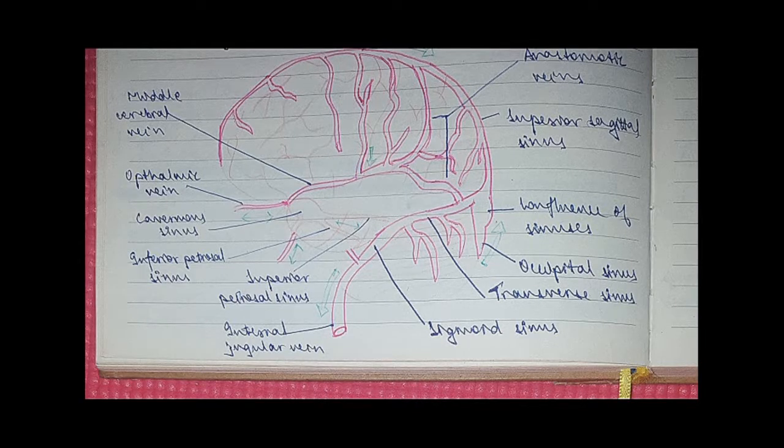And this confluence of the sinuses then goes on to become the transverse sinus which drains into the sigmoid sinus and that eventually drains into the internal jugular vein.